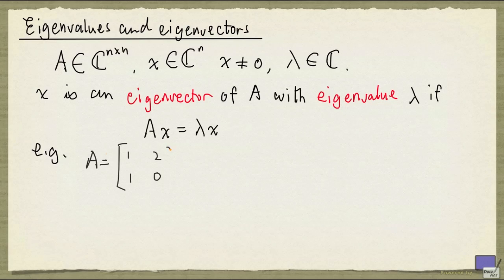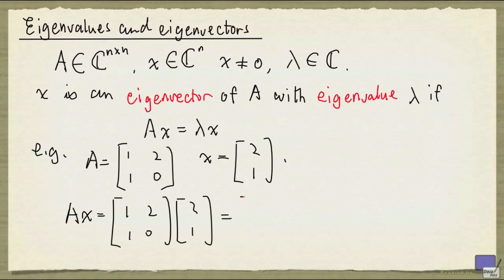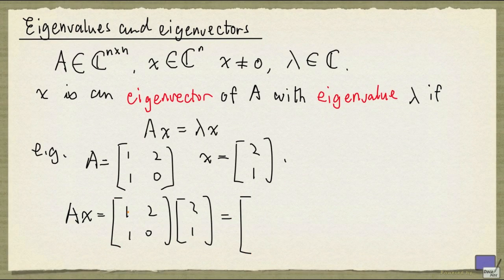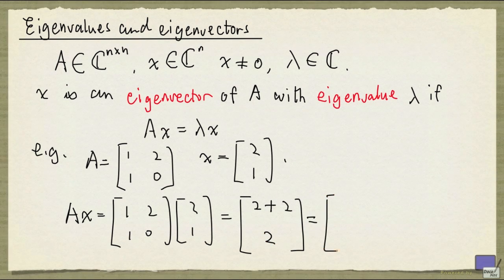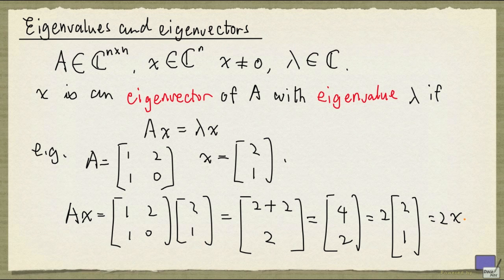Let's look at an example. Say A is the matrix [[1,2],[1,0]] and x is the vector [2,1]. Now if you multiply A and x, you'll get in the first entry 1 times 2 plus 2 times 1, so you have 2 plus 2. And in the second entry, you'll get 1 times 2, that's 2, plus 0 times 1, that's 0, so that's just 2. And that's [4,2]. And you can express this as 2 times [2,1], which is 2 times x.